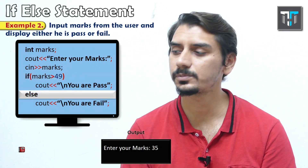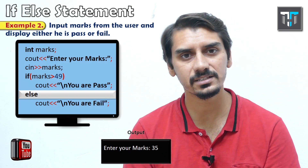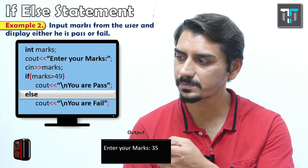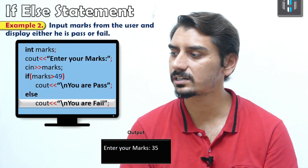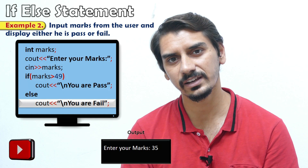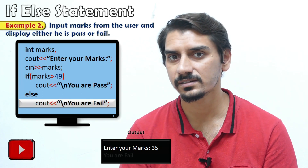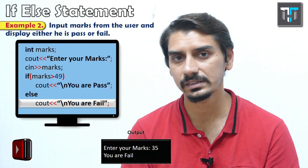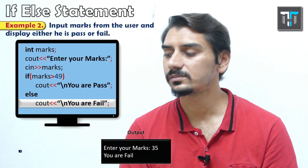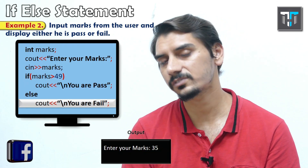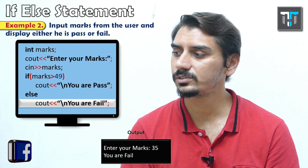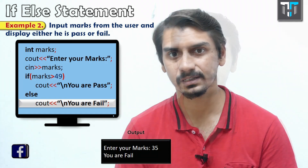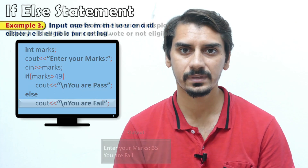Since the condition is false, the program moves to the else part. In the else part we display 'you are fail'. So the output of this code when the user enters 35 marks is 'you are fail'.